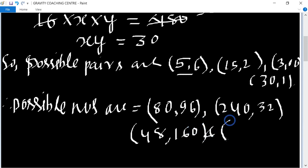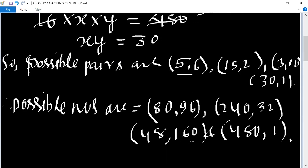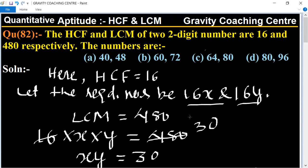So two-digit numbers satisfy which one? 80 and 96. Option D is the right answer.